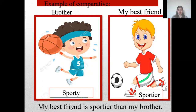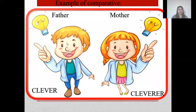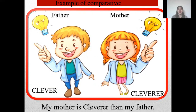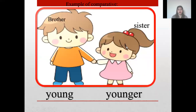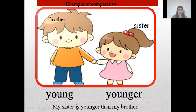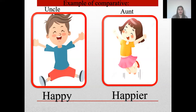My best friend is sportier than my brother. Again, my best friend is sportier than my brother. Next — father and mother. Clever, cleverer. My mother is cleverer than my father.